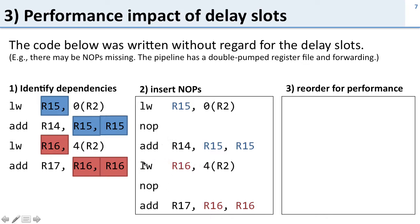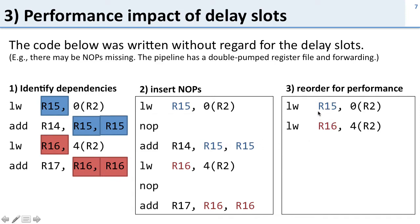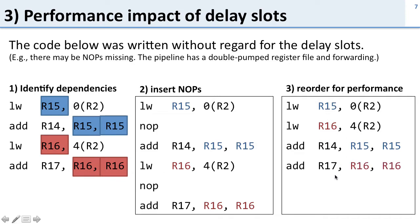We can reorder this for better performance. The second load word doesn't depend on the first load word, so we can move it up into the delay slot and eliminate that no-op. Now we have both load words first, then the first add (one cycle after loading R15), then the second add (one cycle after loading R16). By rearranging these instructions we fill the delay slots and get better performance.